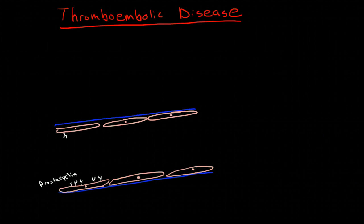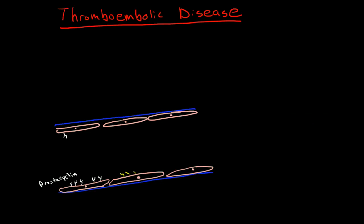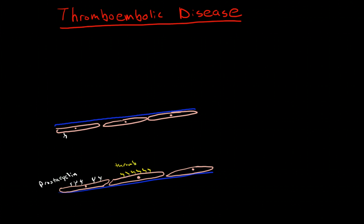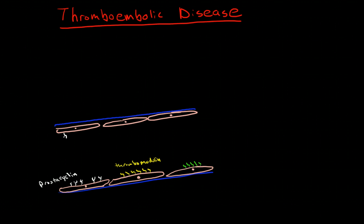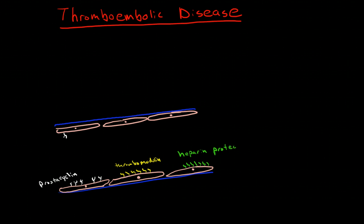Another similar protein is called thrombomodulin. And then there is another protein — actually it's not a protein at all, it's a proteoglycan, so it's a combination of peptides and carbohydrate molecules — and these are called heparin proteoglycans. Now we've figured out how to make our own heparins and give them to patients, but they are similar to the chemicals expressed by our endothelial cells.